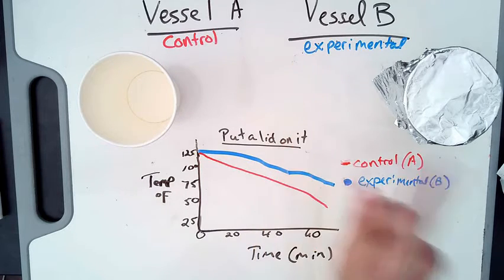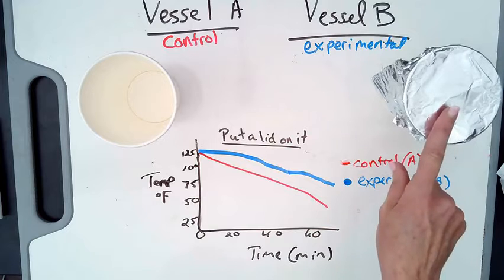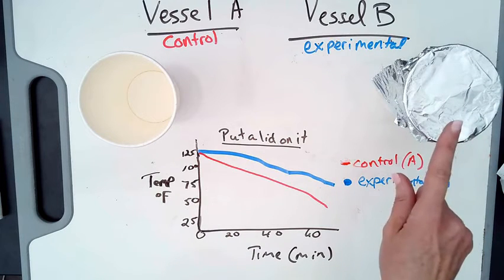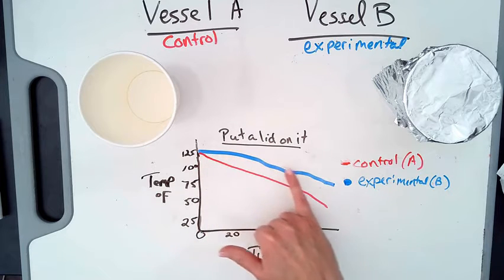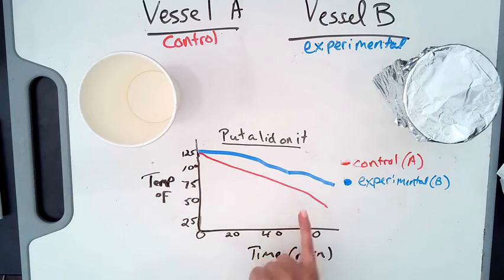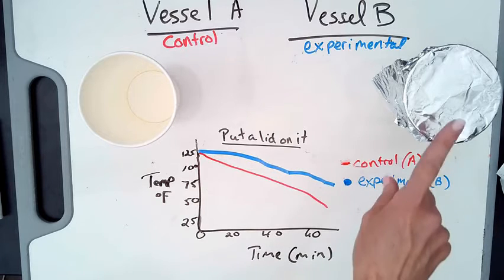The only difference, and there was only one difference, this vessel has a lid. So how did that one variable affect the temperature of the water? Well, if you look at my graph, you can see the temperature of water decreased over time but much slower for this one than the control.